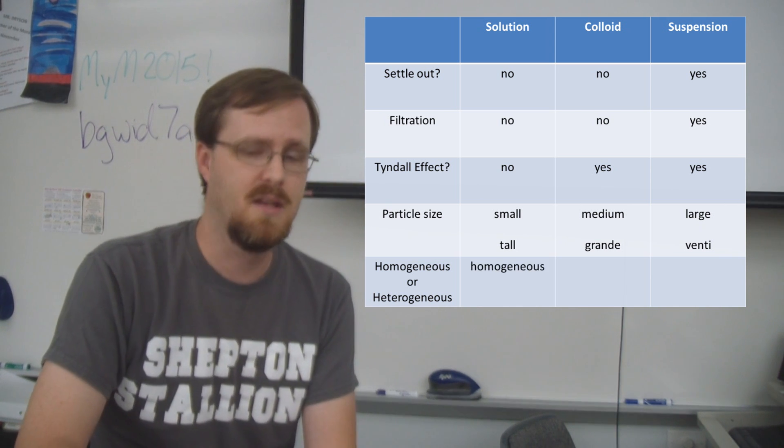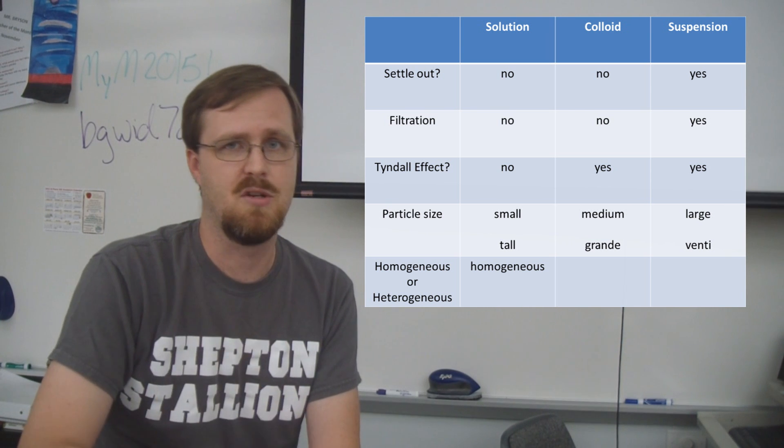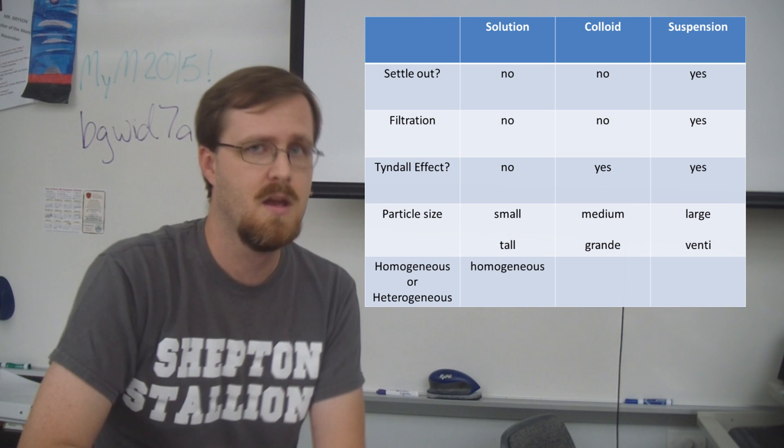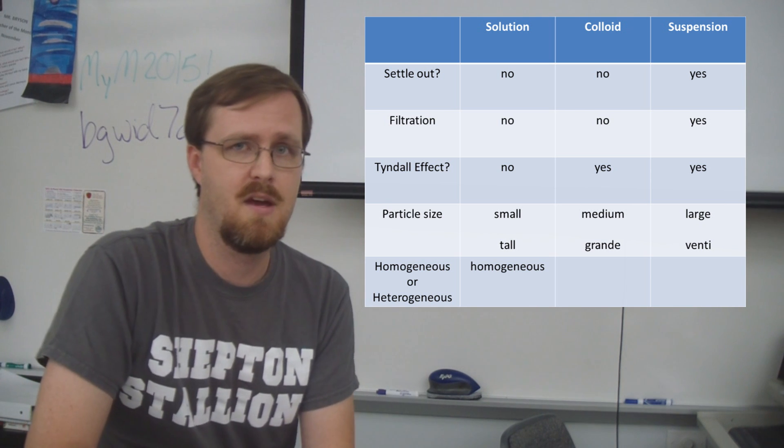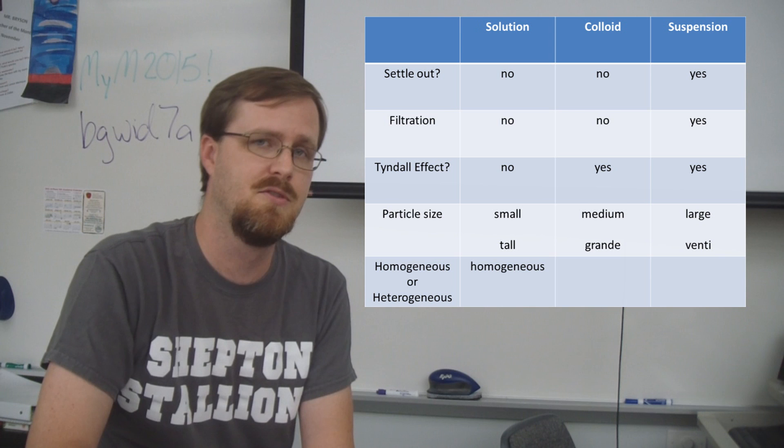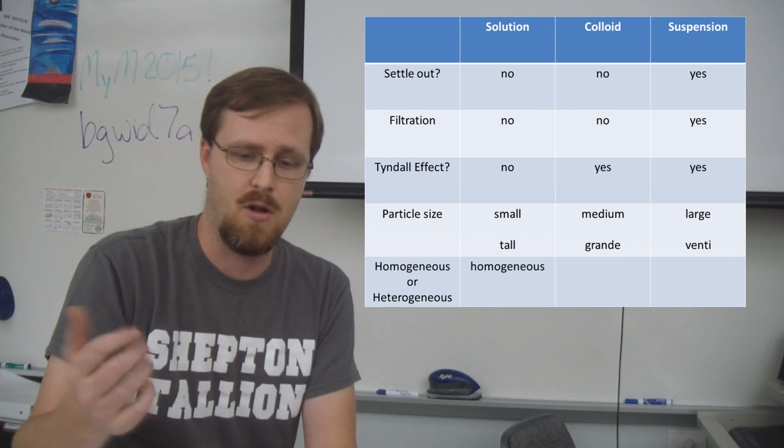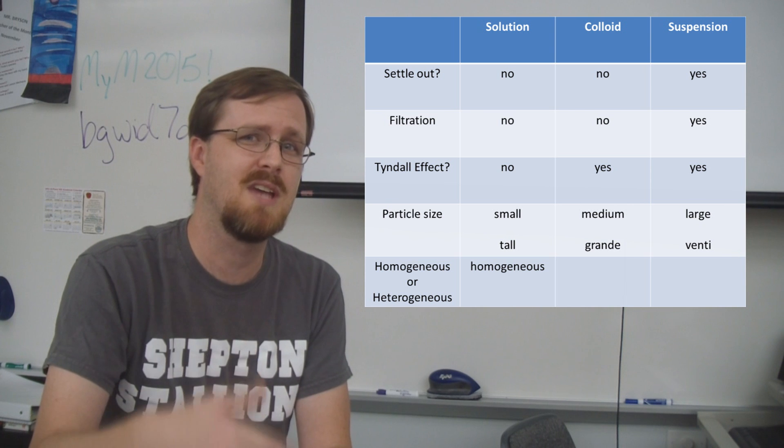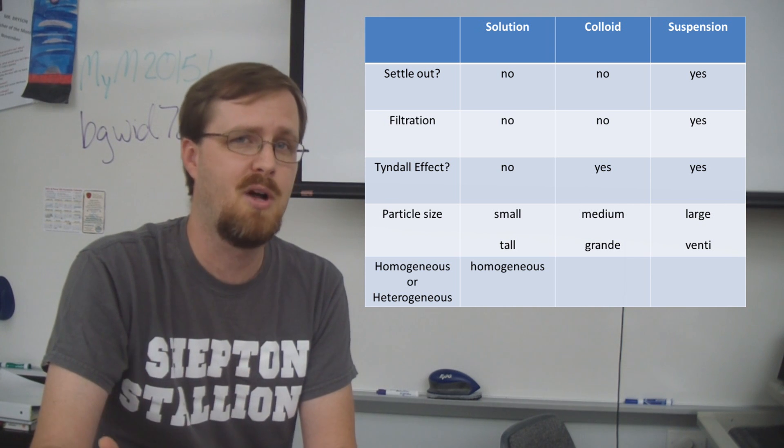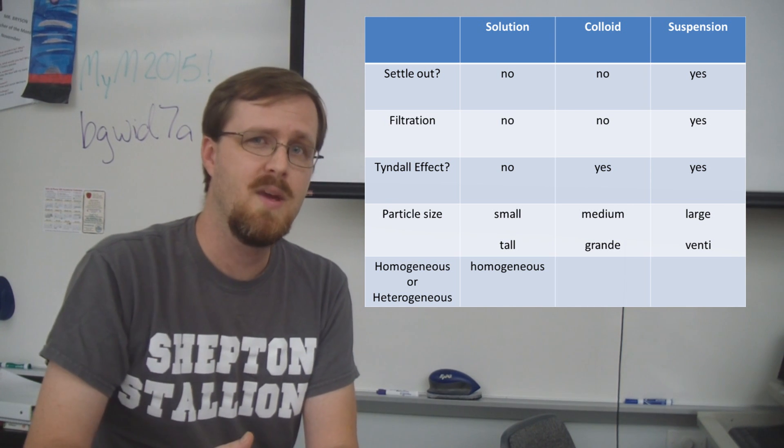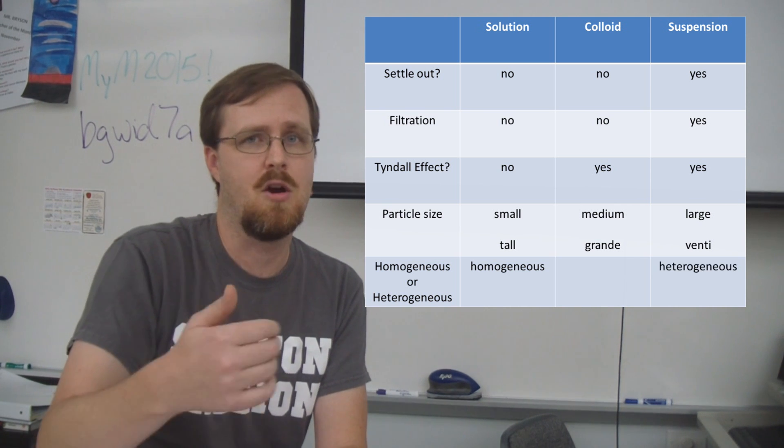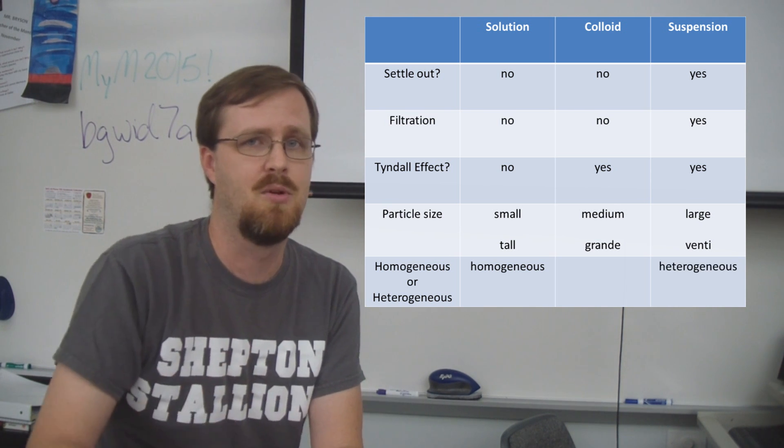Okay, now let's think about a suspension, like say, orange juice with pulp. Okay, you get a big pitcher of the orange juice and you pour out five different samples of that for all of your friends. Well, not every glass is going to have the same amount of pulp. So as a result, we can say that suspensions are heterogenous, meaning that they are different throughout and every sample would be different.